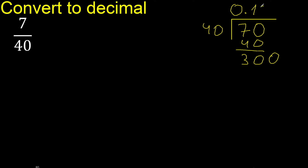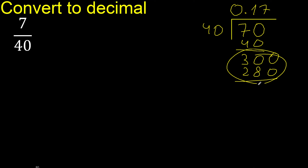40 multiplied by 8 is 320, which is greater than 300, so we use 7. 40 multiplied by 7 is 280. We subtract: 300 minus 280 is 20.